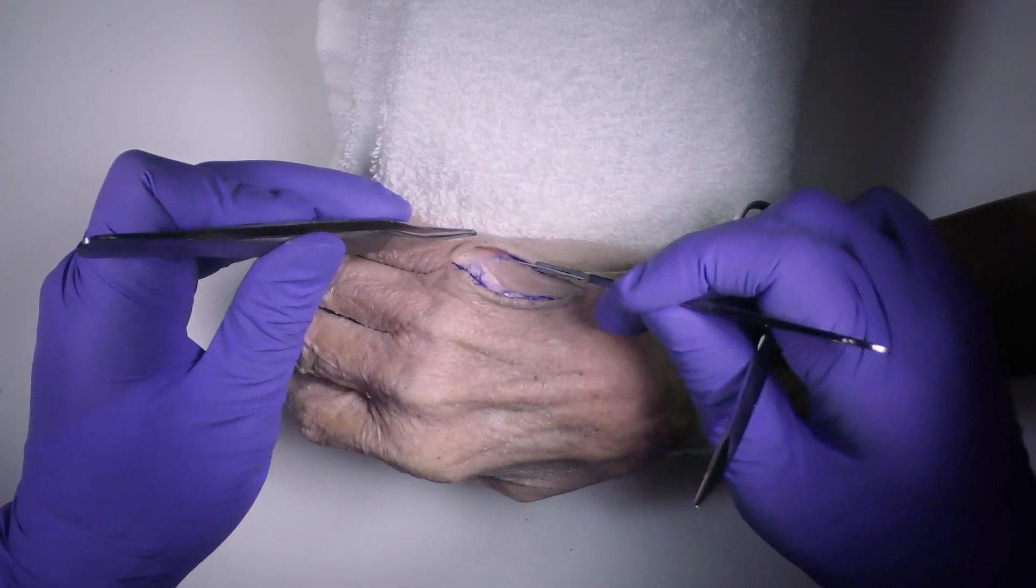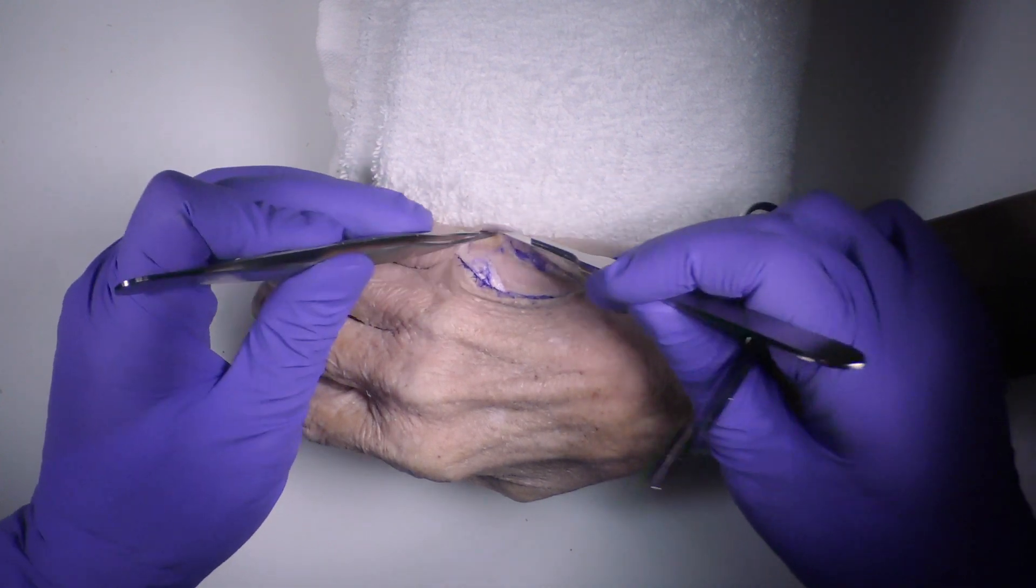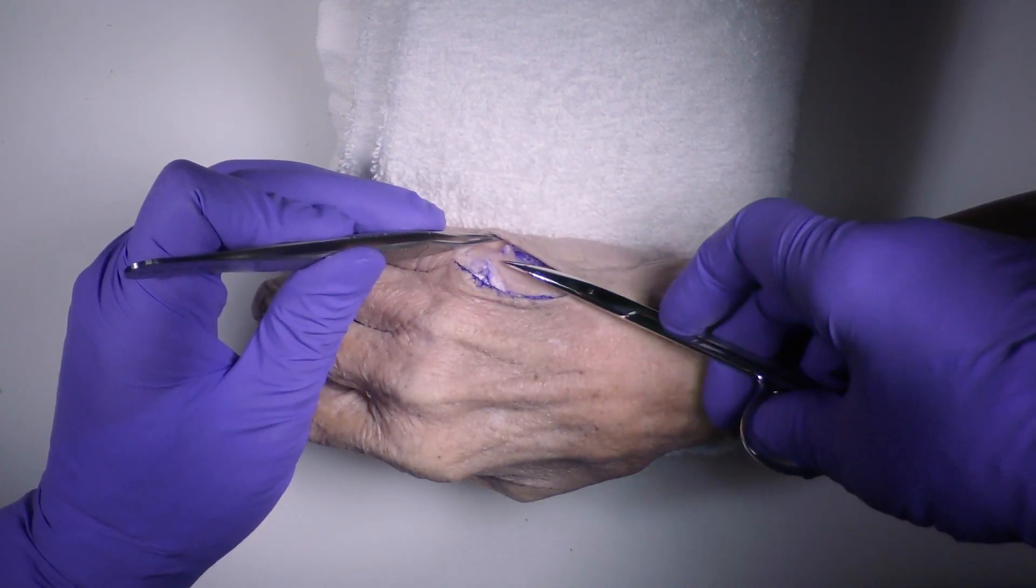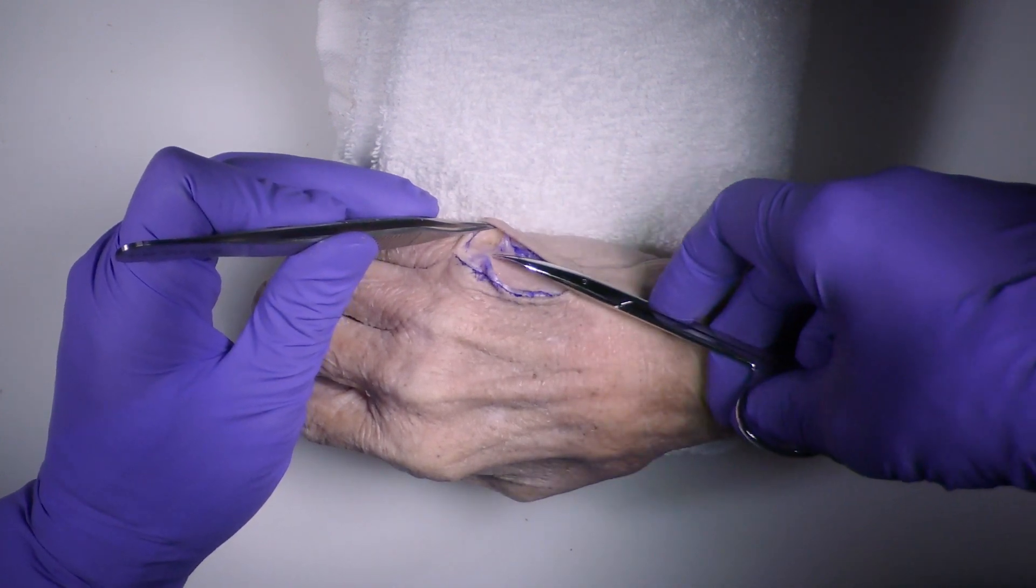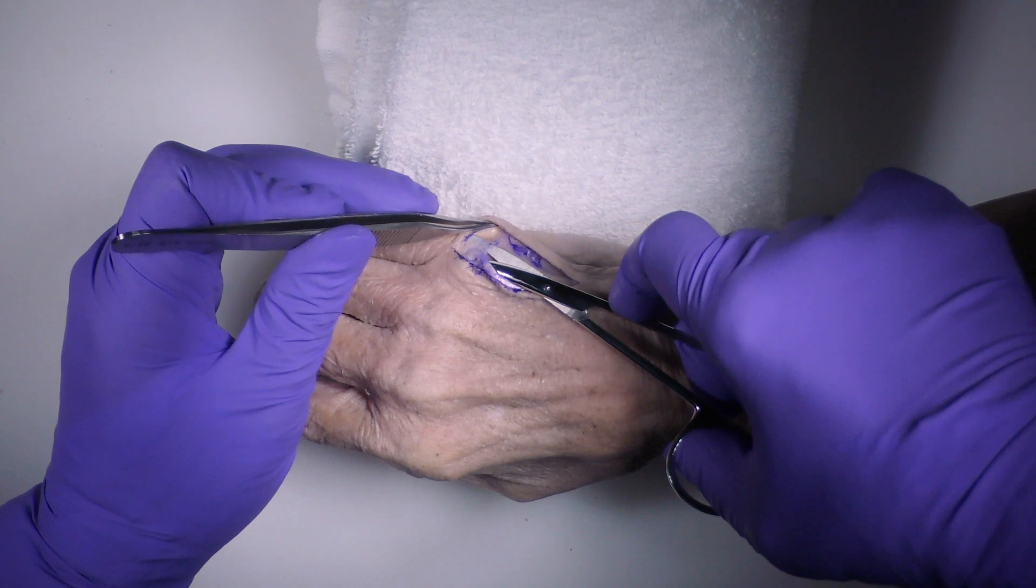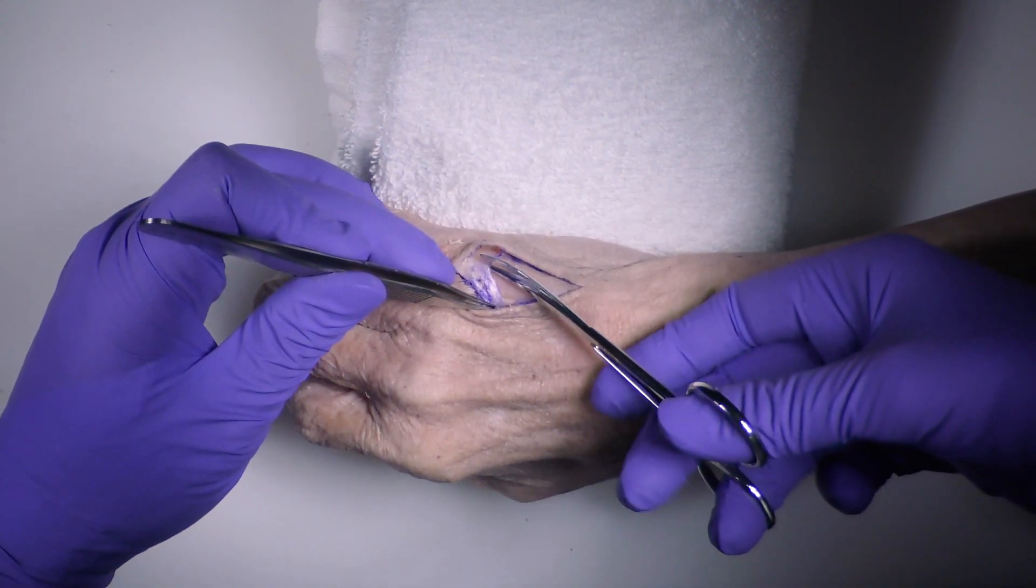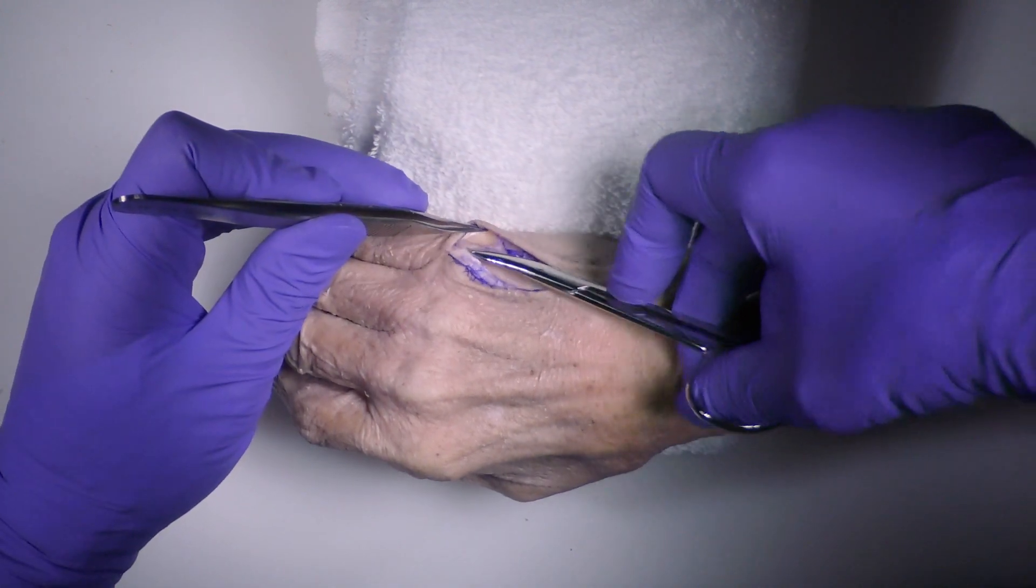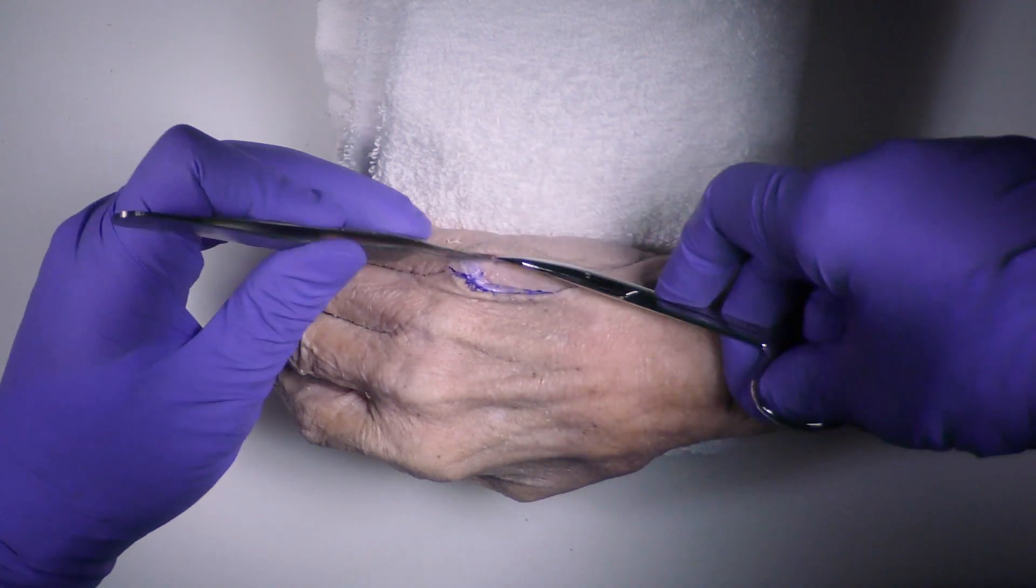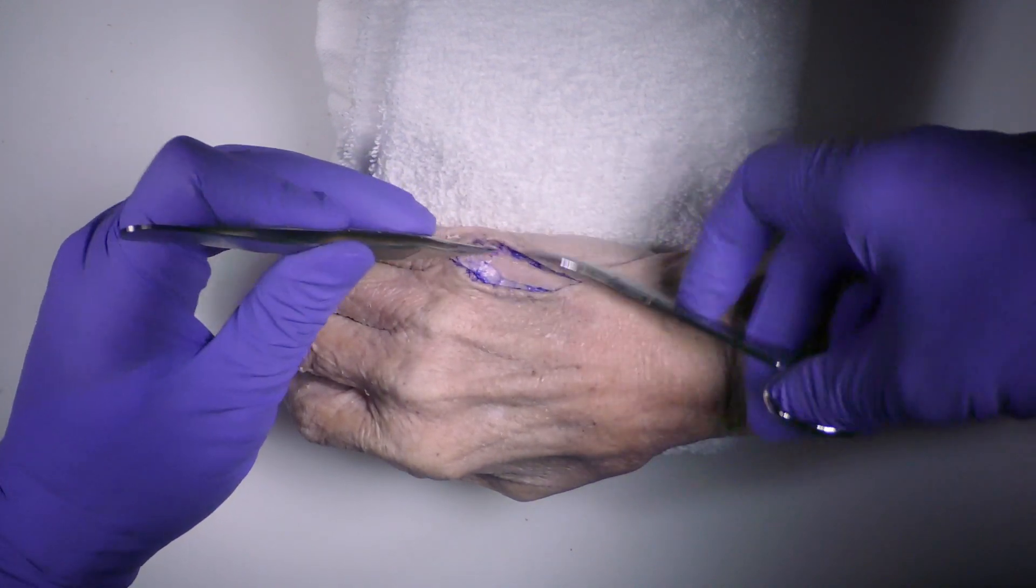So as we expose distally, we start to come into what's called a sagittal band, which is right about here. And you often have to mobilize that a little bit in terms of seeing your metacarpal head and neck regions right here, this layer here. And if you have to take it, you can. We typically will repair this because it can destabilize the tendon a little bit in terms of how it moves and glides over the metacarpal head. So I'm going to take more than I normally would just for the sake of exposure and visualization.